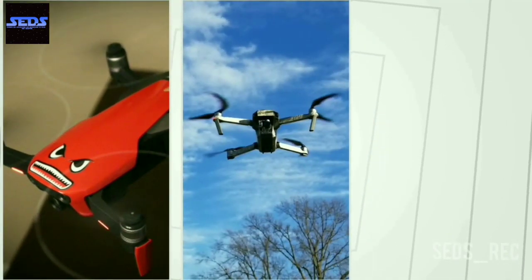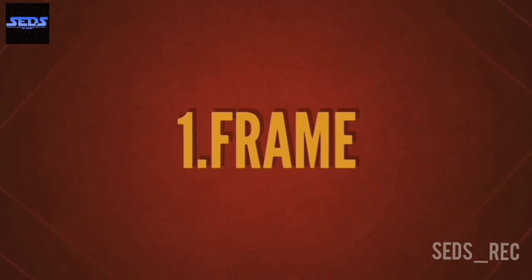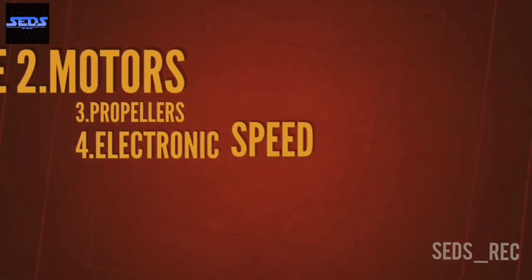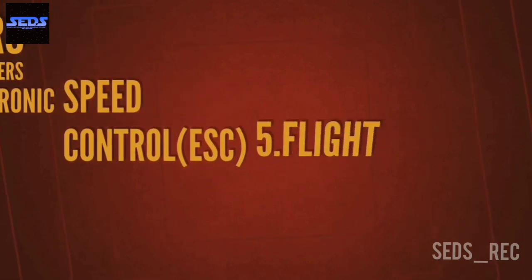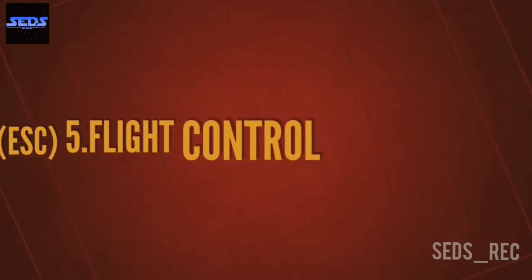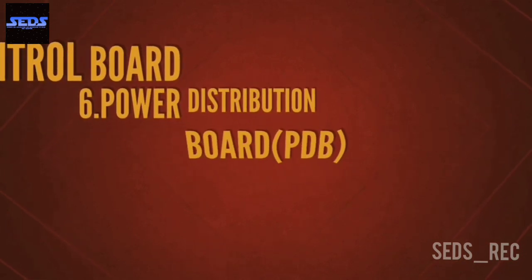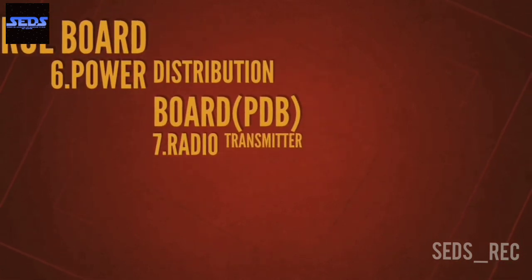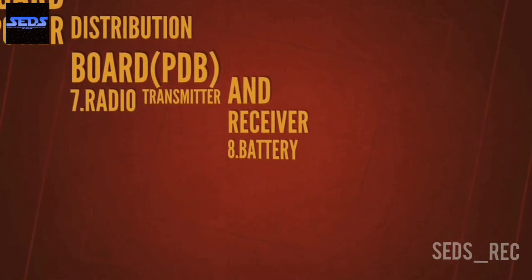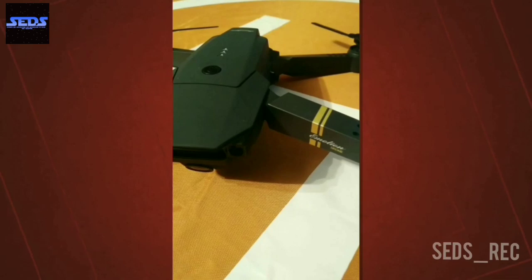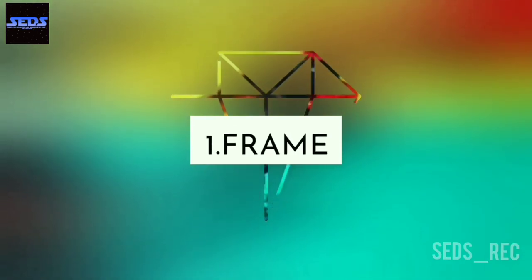Now let's see the basic components that are needed to build a drone: number one, frame; number two, motors; number three, propellers; number four, electronic speed control; number five, flight control board; number six, power distribution board; number seven, radio transmitter and receiver.